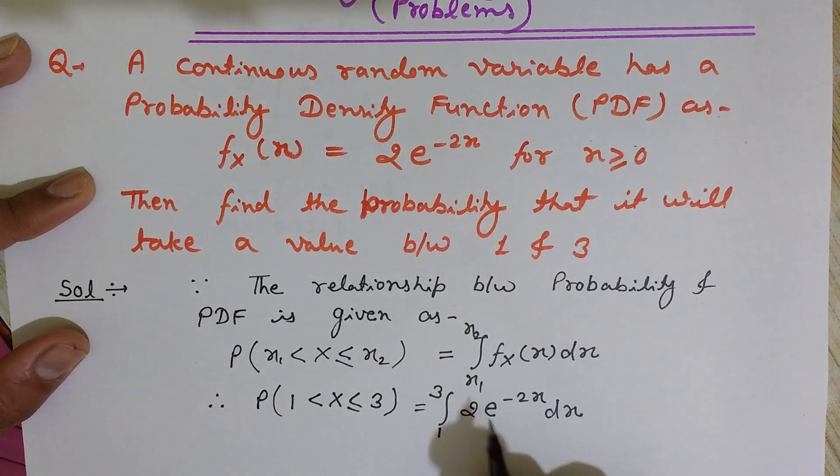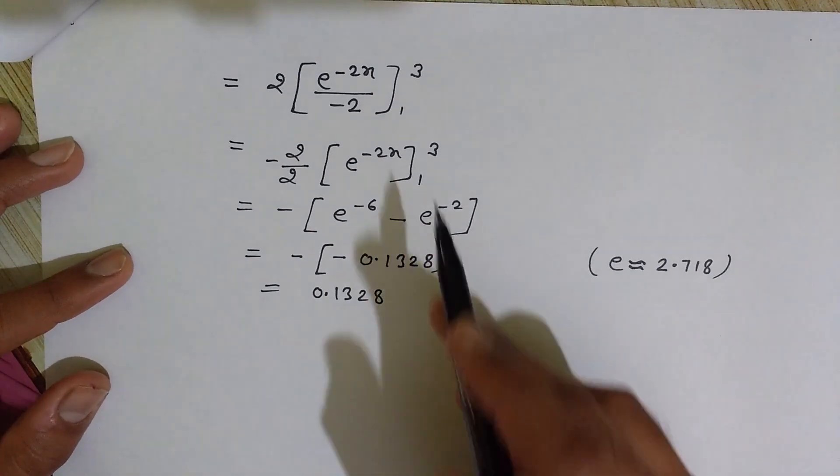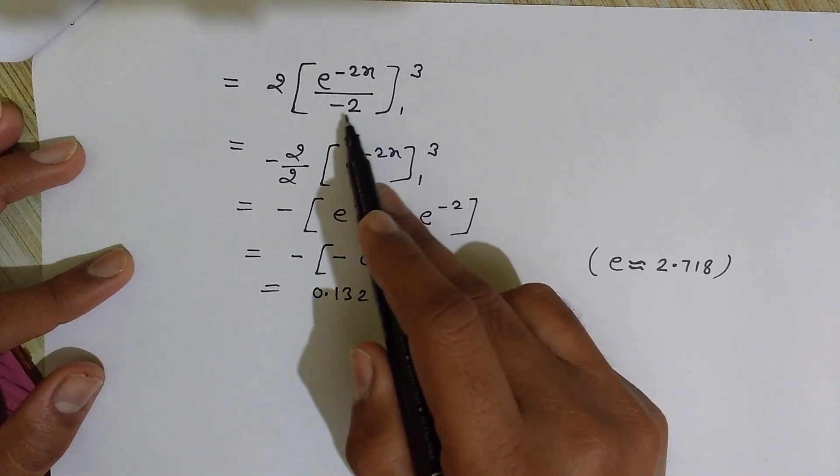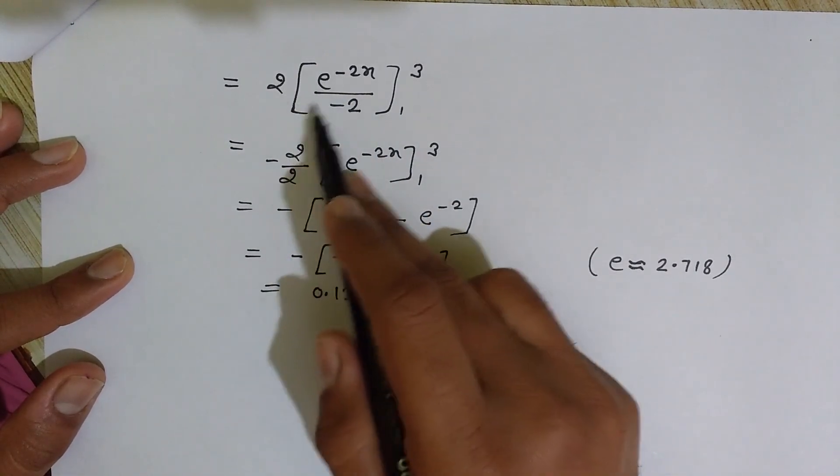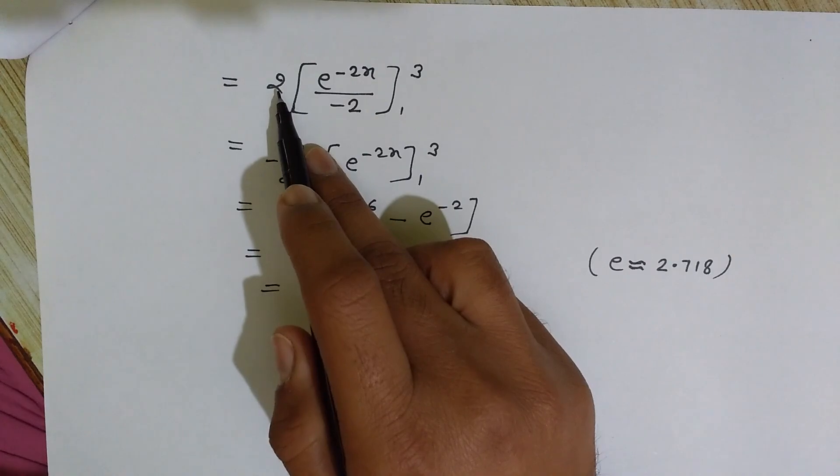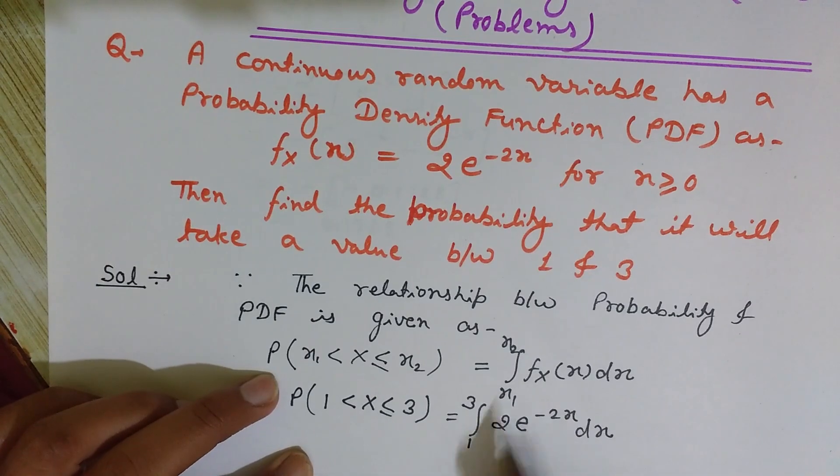What is its integration? Let us solve it. Integration of e^(-2x) is e^(-2x)/(-2). This coefficient minus 2 and limits 1 to 3, and the constant 2 we have taken out from the brackets.